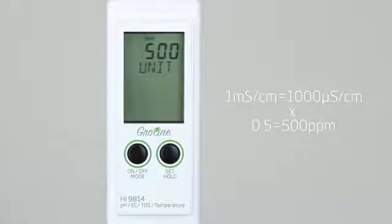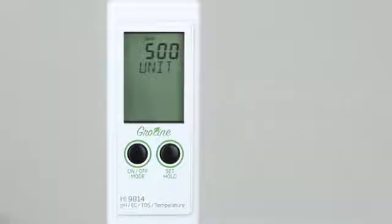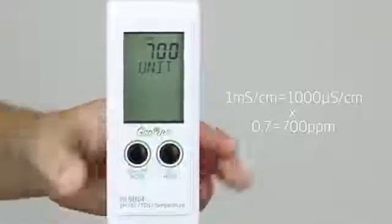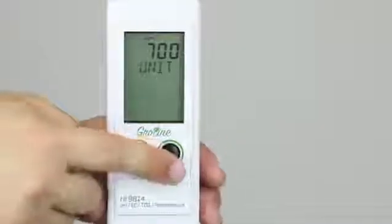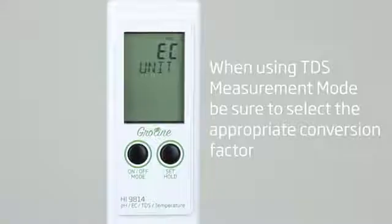500 unit is then displayed for showing concentration readings using a 0.5 conversion factor. Pressing set again shows 700 unit for a 0.7 conversion factor. Pressing set again cycles the measurement option back to EC unit.